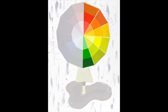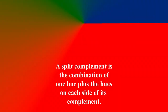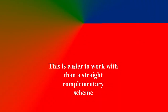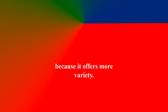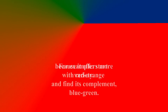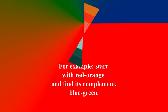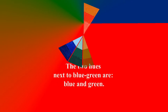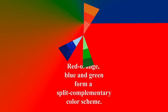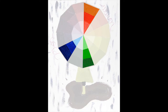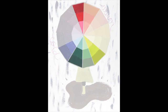A split complement is the combination of one hue plus the hues on each side of its complement. This is easier to work with than a straight complementary color scheme. Start with red-orange and then find its complement, blue-green. We won't use blue-green, but we use the two hues next to it, which are green and blue. These three colors form a split complement.